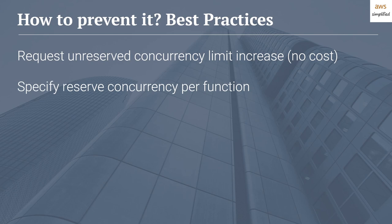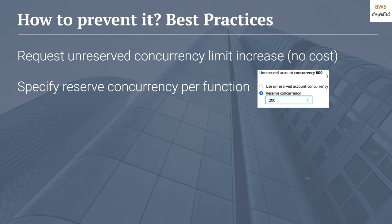The second mitigation technique is to specify a reserved concurrency per function. Go to your Lambda function's configuration section, where there is a concurrency section showing provisioned concurrency limits. Reserved concurrency reserves a number of concurrent execution requests for a particular Lambda function. In our three-function example, instead of all competing for the 1000 limit, you can slot 200 concurrent executions for a specific function. Regardless of what other functions are doing, that function will always be able to handle 200 concurrent requests, while the other two compete for the remaining 800.